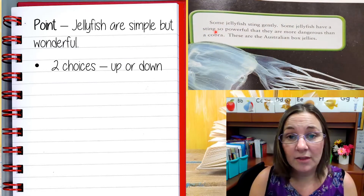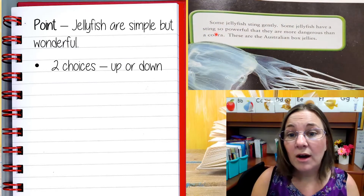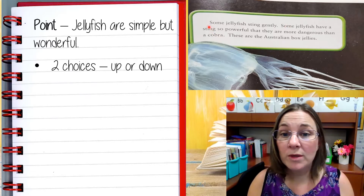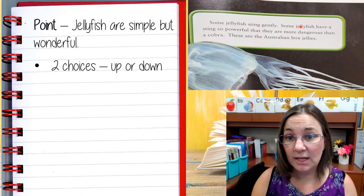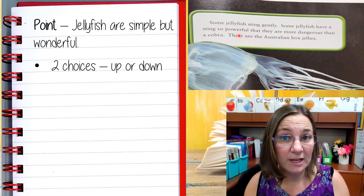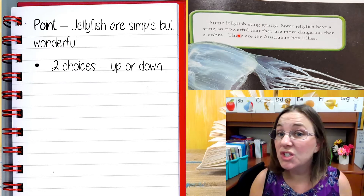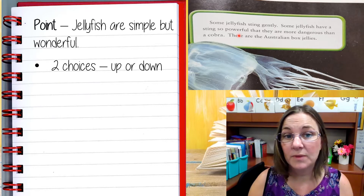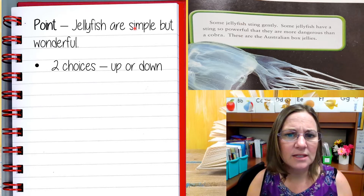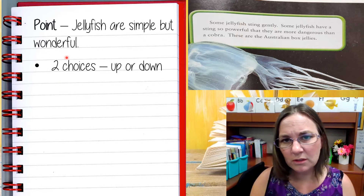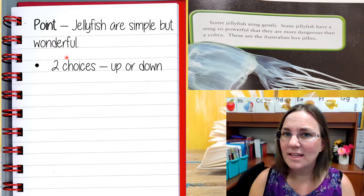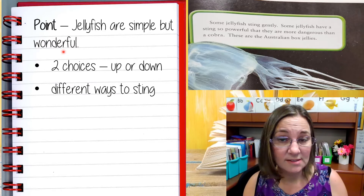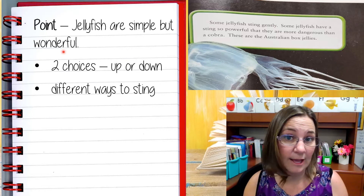Then I'm going to look at another page. On this page we were reading about jellyfish stings. We read that some of them sting gently and some of them sting powerfully — they have different kinds of stings. Not all of them are dangerous. Does that support the idea that they're simple but wonderful? I think so, because I think it's wonderful that they have different ways to sting. They're not all exactly alike.